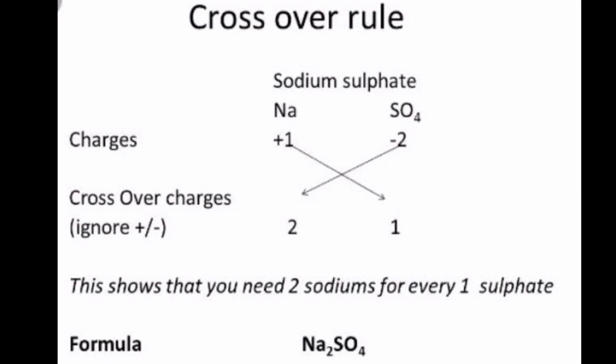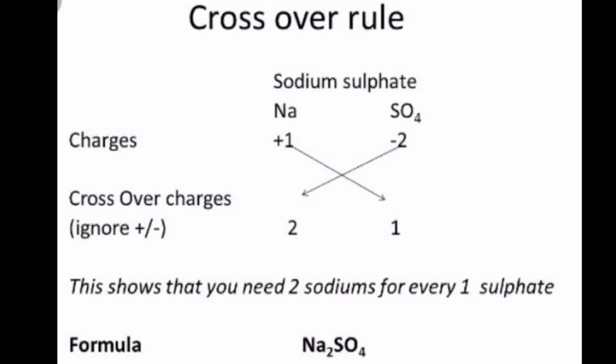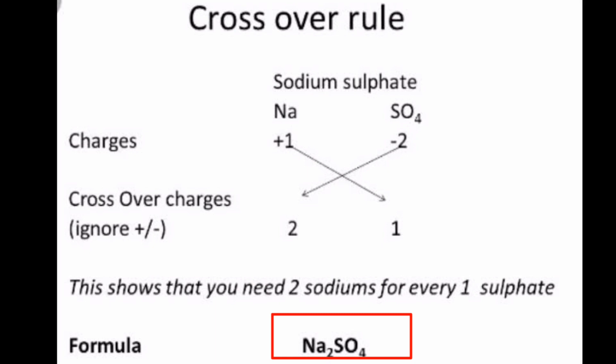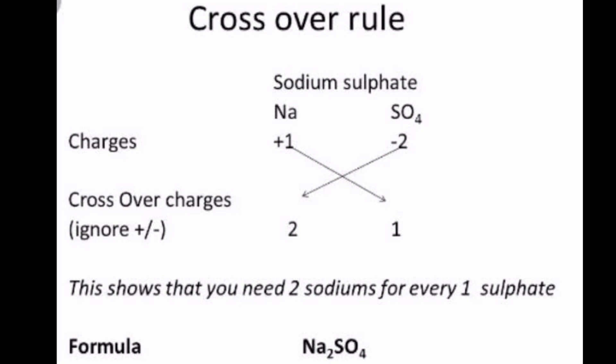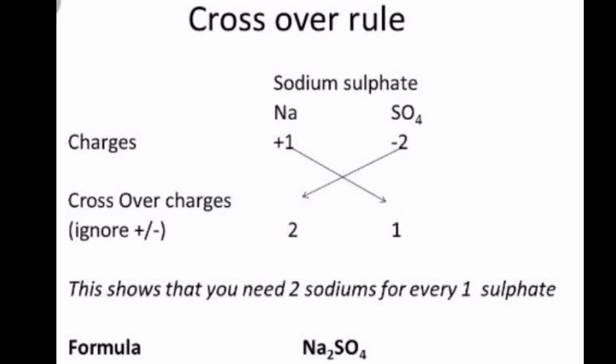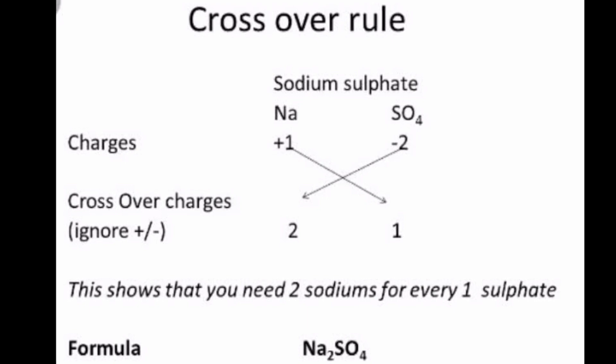Sodium sulfate. We are taking sodium and sulfate. The formula will be Na2SO4. Symbols are Na and SO4, charges plus 1 minus 2. Ignoring the charges, crossover rule is applied and we get the formula as Na2SO4.